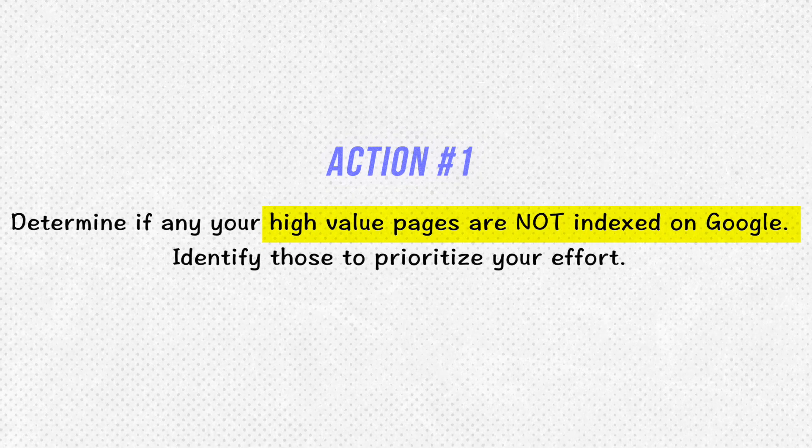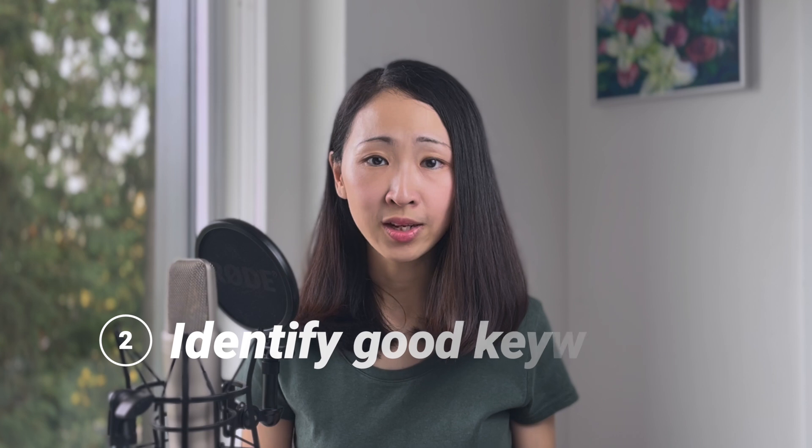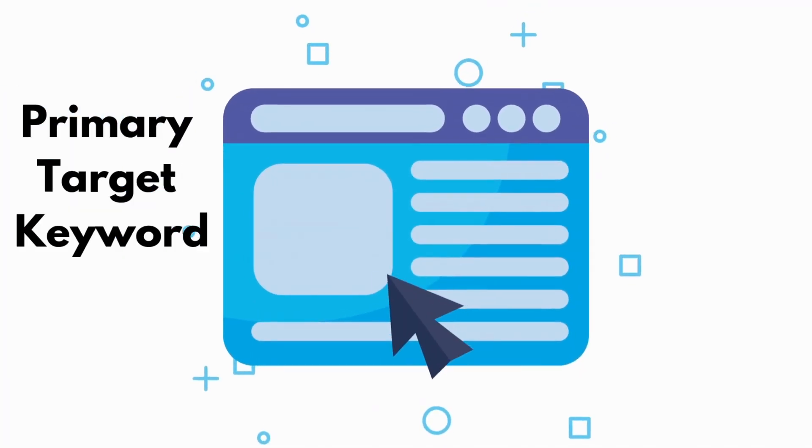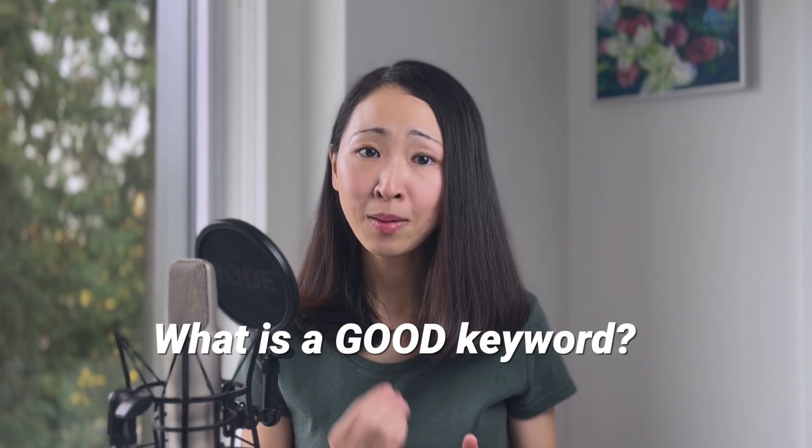The next action is to identify good keyword opportunities. Most brands I've talked to take this step lightly and randomly pick keywords they like and start creating content. Of course you may still rank for some keywords that way, but there is a better way. The number one mistake most site owners make is targeting too many keywords for one piece of content — their articles end up cannibalizing each other and competing for ranking. Every page should have a primary target keyword — important pages like your homepage, category page, and blog page.